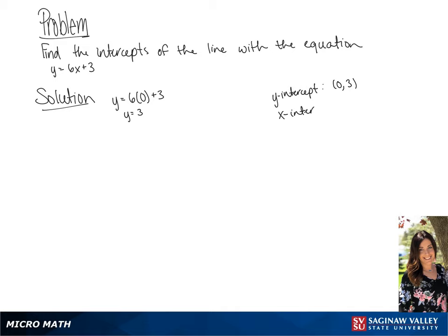Now to find the x-intercept, we're going to plug in 0 for y, giving us 0 equals 6x plus 3.